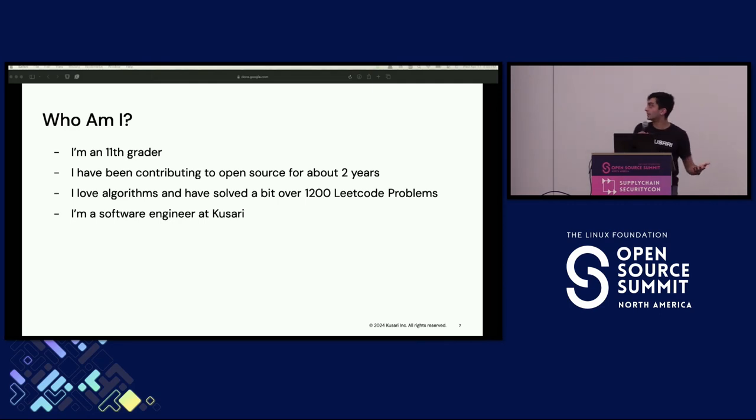Who am I? My name is Nathan Levine. I'm an 11th grader in high school. I'm a software engineer at Kasari, and I've been contributing to GUAC for about a year and a half now. In my free time, I love solving algorithms and practicing Brazilian Jiu-Jitsu.